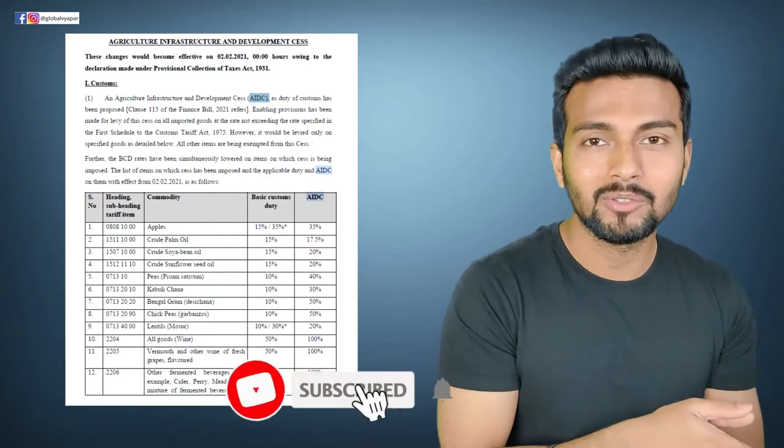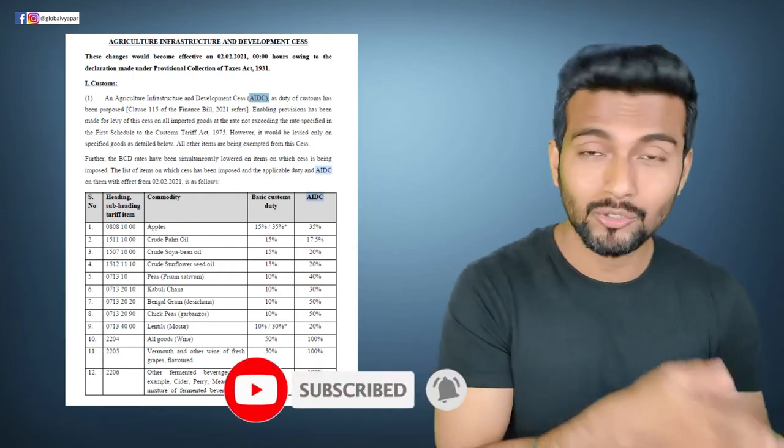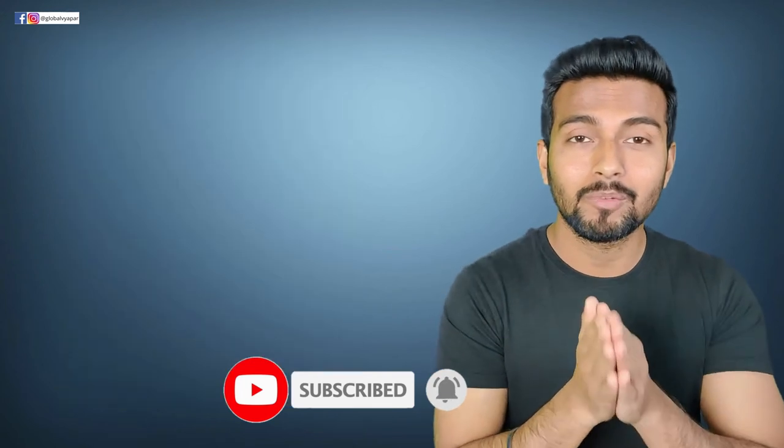This is the way to sort out the budget from the perspective of the customs agent and from the perspective of the importer. Now, the most important change is that the AIDC is introduced - Agriculture, Infrastructure and Development. So first of all, the education cess was going to be seen as a duty figure. The duty will be reduced in gold, the duty will be reduced in silver. So what does this mean? Duty is reduced, cess is reduced, so counterbalance has been reduced.